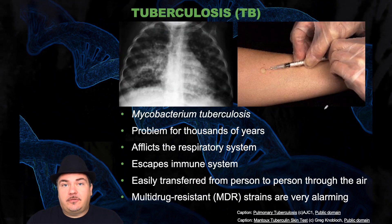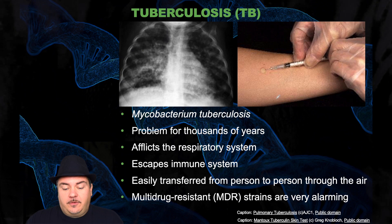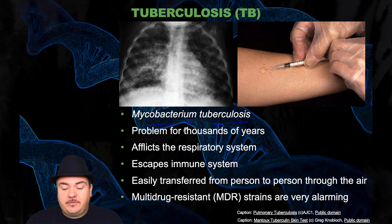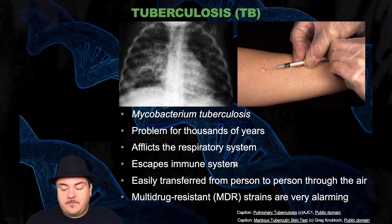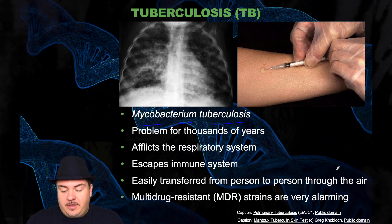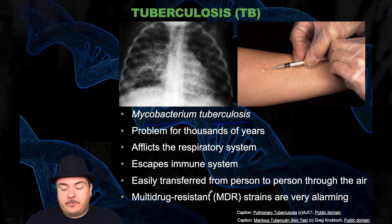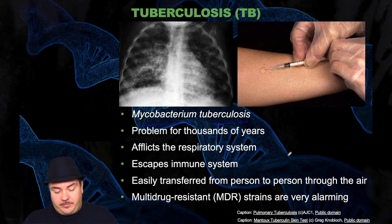Some examples of bacterial infections: first, tuberculosis. This is from Mycobacterium tuberculosis. It's been a problem in humans for thousands of years. It affects our respiratory system, escapes the immune system, is easily transferred from person to person through the air, and there are multiple drug-resistant strains, which is very alarming.